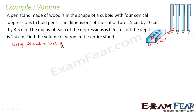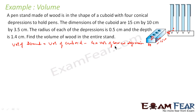Volume of stand is equal to volume of cuboid minus 4 times the volume of each conical depression. Volume of cuboid is length × breadth × height (l × b × h), minus 4 times one-third π r² h, which is the volume of the conical depression.